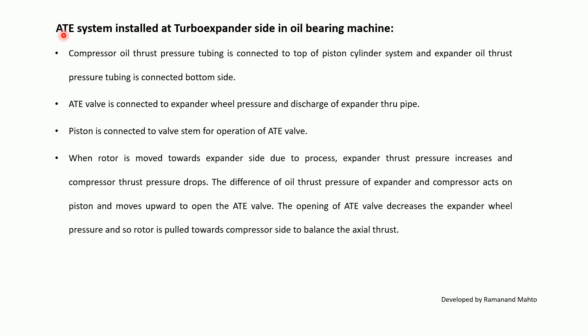When the AT is installed at the turbo expander side in an oil bearing machine, the compressor oil thrust pressure tubing is connected to the top of the piston-cylinder arrangement and the expander oil thrust pressure tubing is connected to the bottom side. The AT valve is connected to the expander wheel pressure and discharge of the expander through pipe, and the piston is connected to the valve stem for operation of the AT valve.